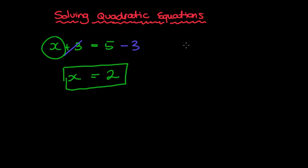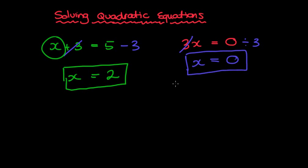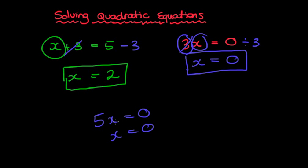Now what about a slightly more challenging question like 3x equals 0? To get rid of the 3 bonded to x by multiplication, the opposite of times 3 is divided by 3. So x equals 0. This is important — if I'm multiplying two things together and the answer is 0, one of them has to be 0. For example, 5x equals 0 means x equals 0.